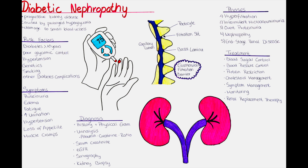Phase 2 is the intermittent microalbuminuria phase. In this phase, small amounts of albumin begin to leak into the urine, which is a crucial early sign of kidney damage. The levels of albumin vary and are not consistently elevated. Phase 3 is overt proteinuria. At this stage, kidney damage worsens, leading to significant amounts of protein leaking into the urine. The microalbuminuria is usually found at levels between 30 and 300 mg per liter.